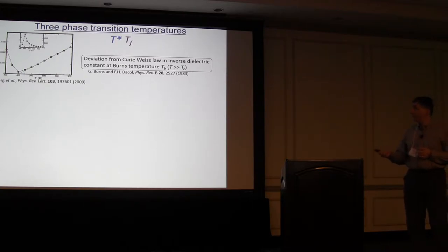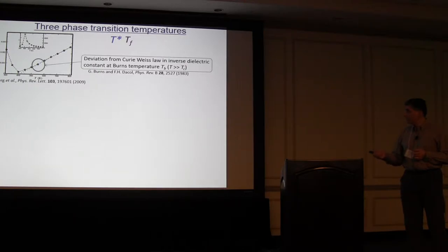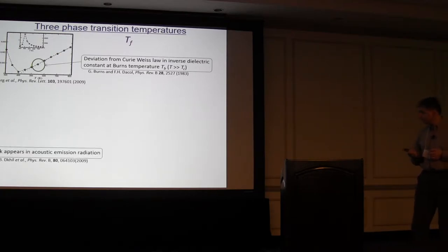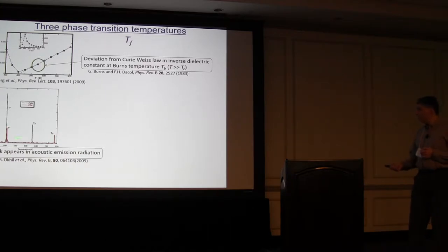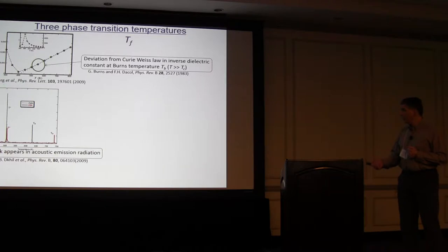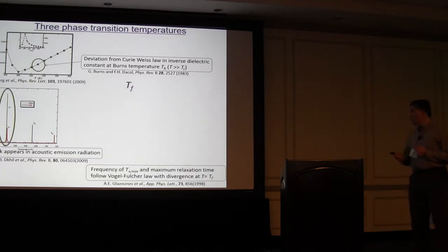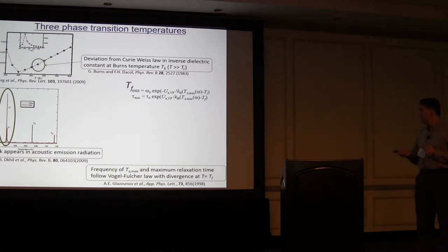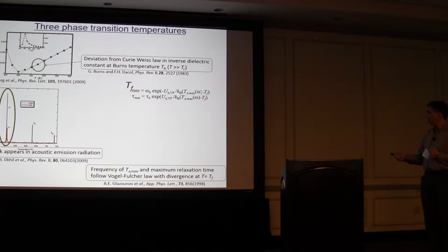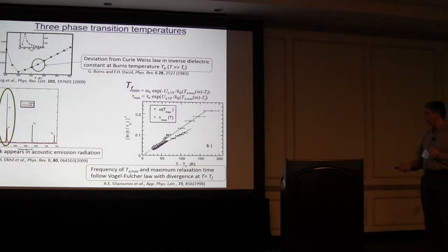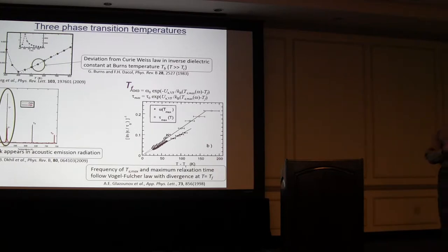If you take the inverse dielectric constant, 1 over the dielectric constant, and plot that as a function of temperature, it obeys the Curie-Weiss Law at high temperatures, but then you start to see a deviation, and the temperature at which you start to see that deviation is referred to as the Burns Temperature. At a somewhat lower temperature, acoustic emission experiments show a strong emission peak, designated T-Star. Finally, as you watch the dynamics, they become non-Arrhenius-like and obey the Vogel-Fulcher relationship — an exponential of some energy divided by a shifted temperature — and this freezing temperature can be picked off from a logarithmic plot of the dynamics where there would be apparent divergence in the response.